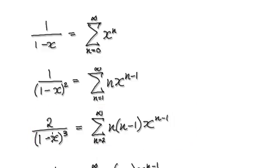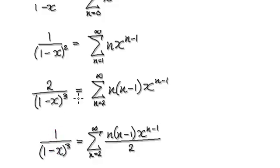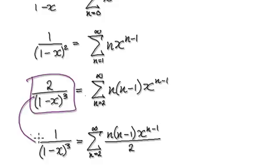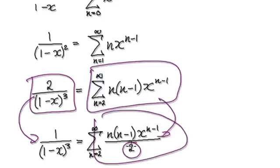Because we want 1 over (1 minus x) to the power of 3, we need to divide both sides by 2. So divide this side by 2 — that gives you this. Divide this side by 2 — that gives you this.